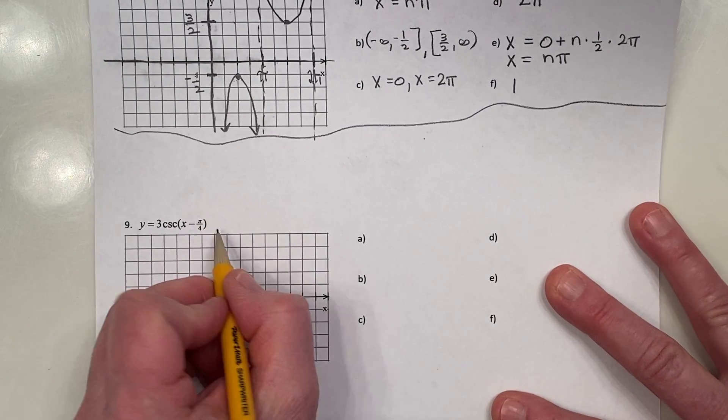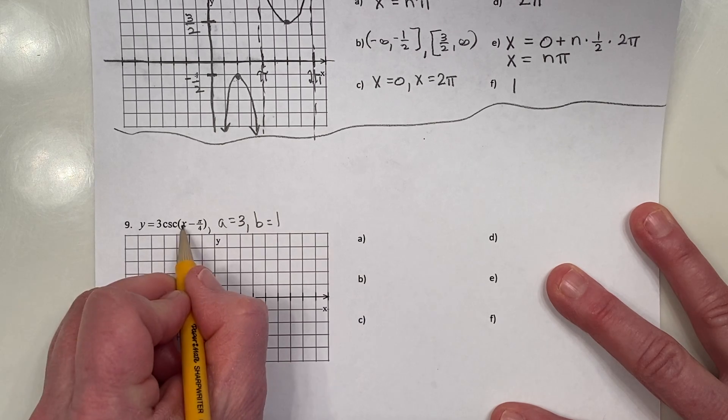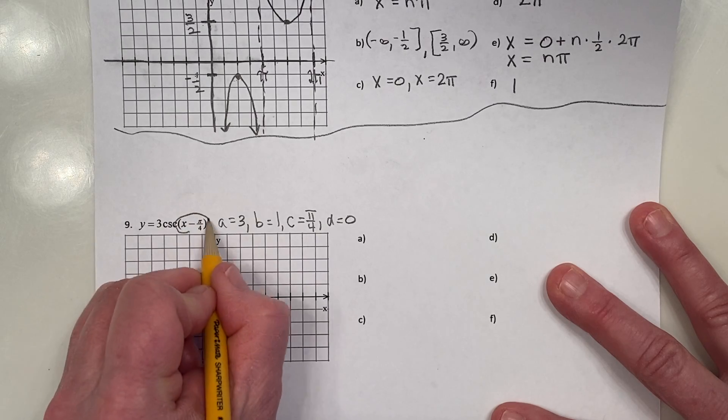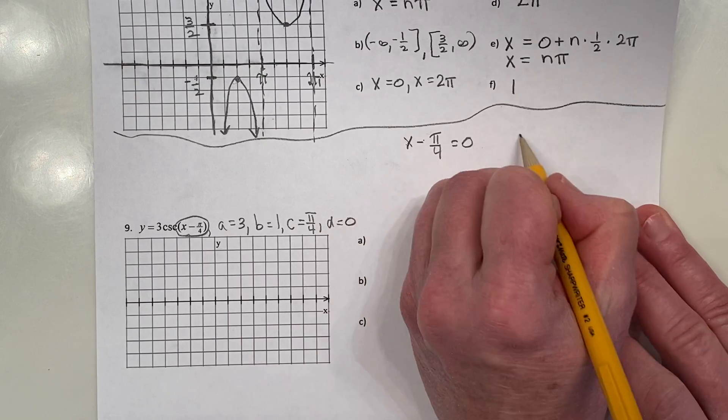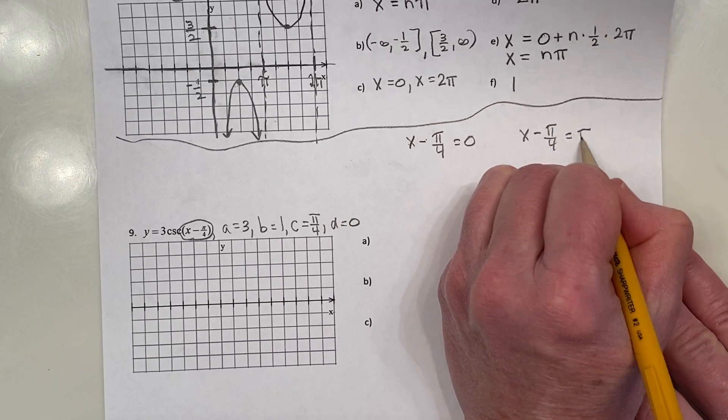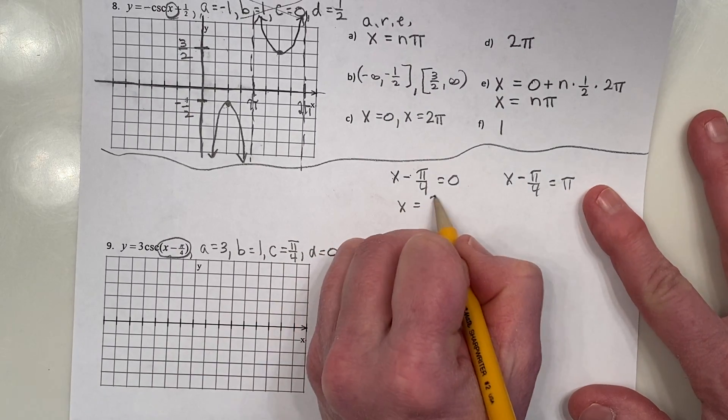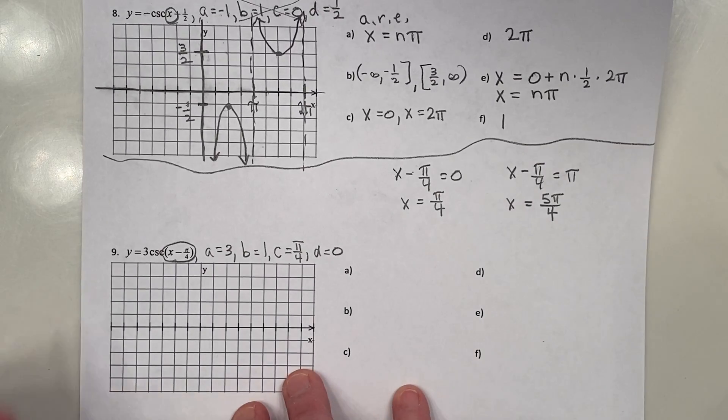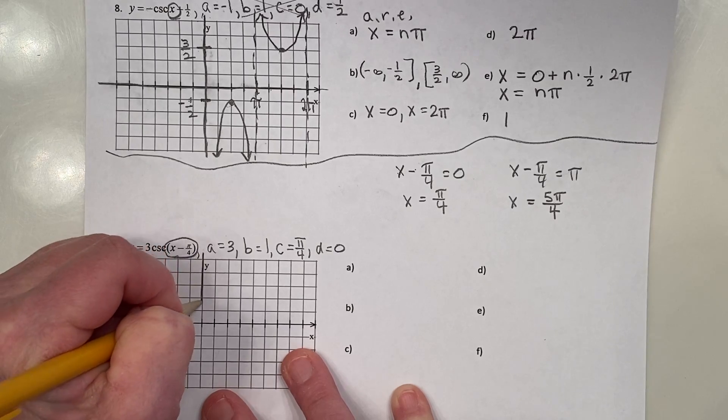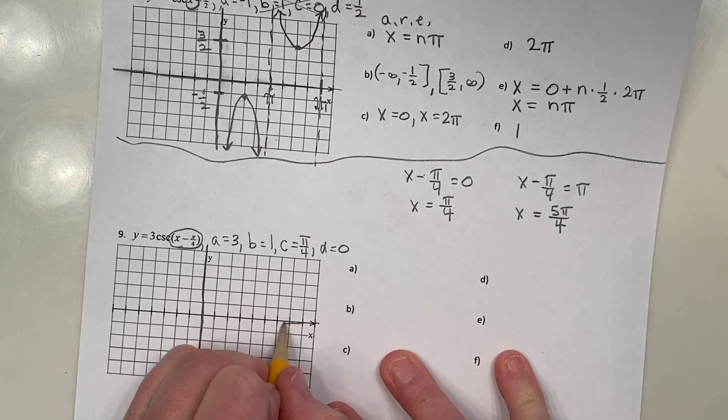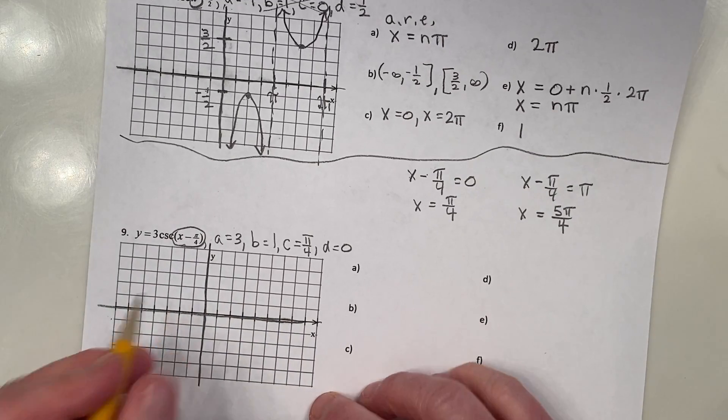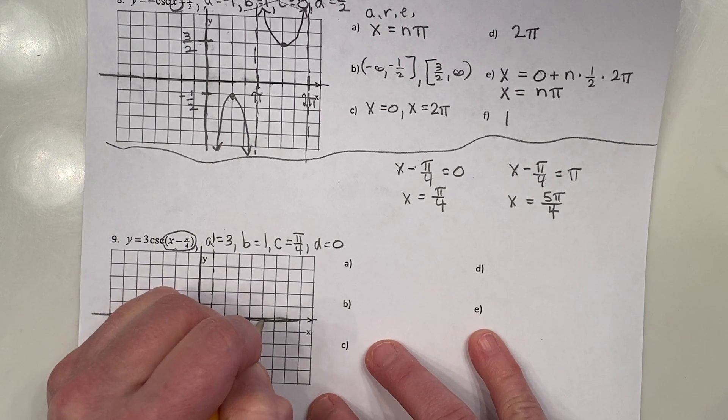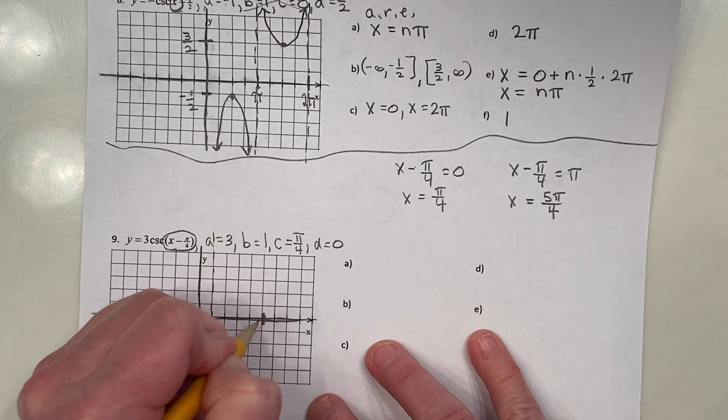And lastly, example nine. So B is one. So we can certainly say C is positive π over four. Thank goodness there's no D value. Take Bx minus C. So that's equal to zero. And then equal to π. Add π over four. So that's five π over four. Let's get those two down and then generate another one. I think I'll have enough room this way. That'll be π over four. That's one π over four. That's two, three, four, five π over four. One, two. I'm right at the edge. So that's five π over four.